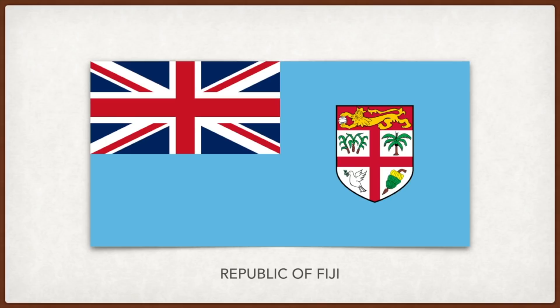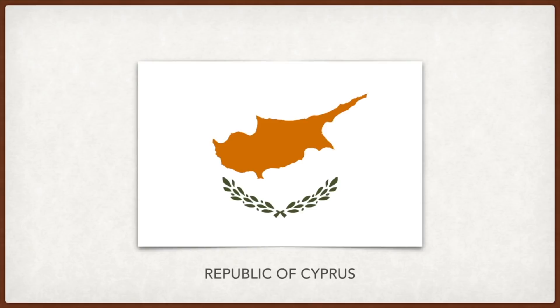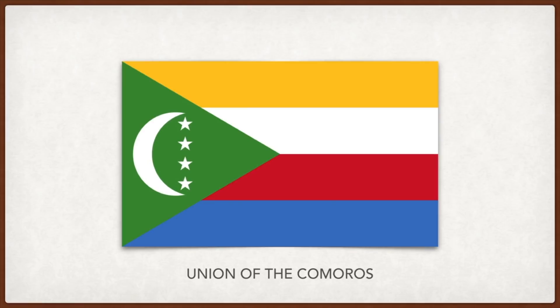Comoros: the green color and crescent represent Islam; the four stars represent the four islands that make up the country. The four stripes also represent the four islands — yellow for Mohéli, white for Mayotte, red for Anjouan, and blue for Grande Comore.